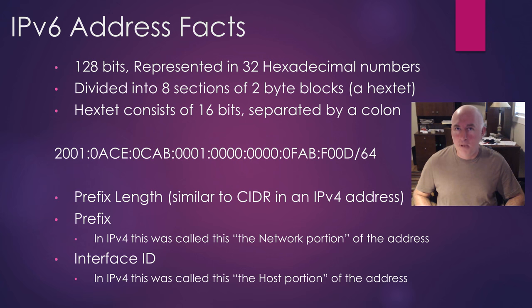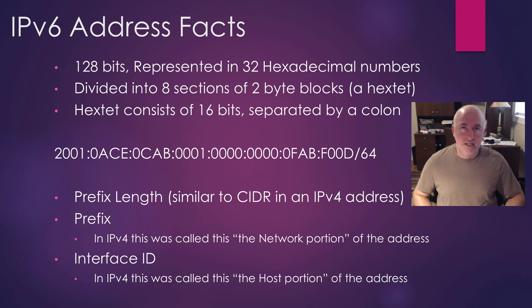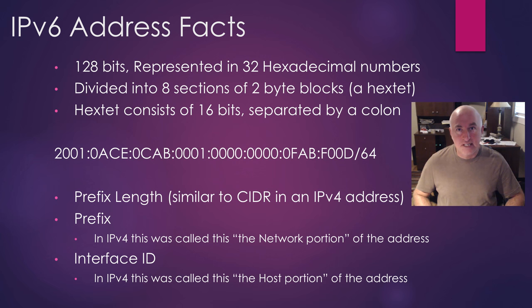That 128-bit binary number is represented in hexadecimal. We use 32 hexadecimal symbols to represent the IPv6 address. With IPv4, we used dotted decimal — decimal numbers separated by dots, where dots represented eight bits, giving us four octets. With IPv6, we divide it into eight sections instead of four, and each section is 16 bits wide. We separate these sections with colons. We call the sections a hexet instead of octet — oct means eight and hex means 16. So we have eight 16-bit sections to an IPv6 address.